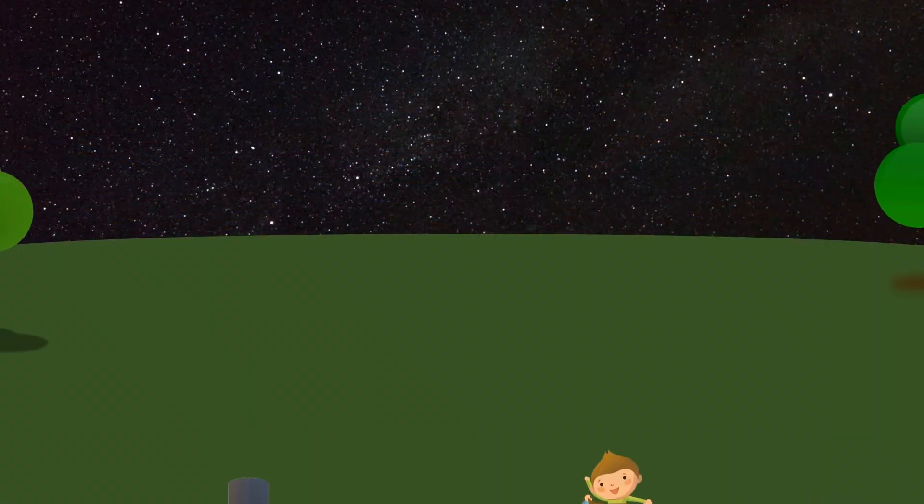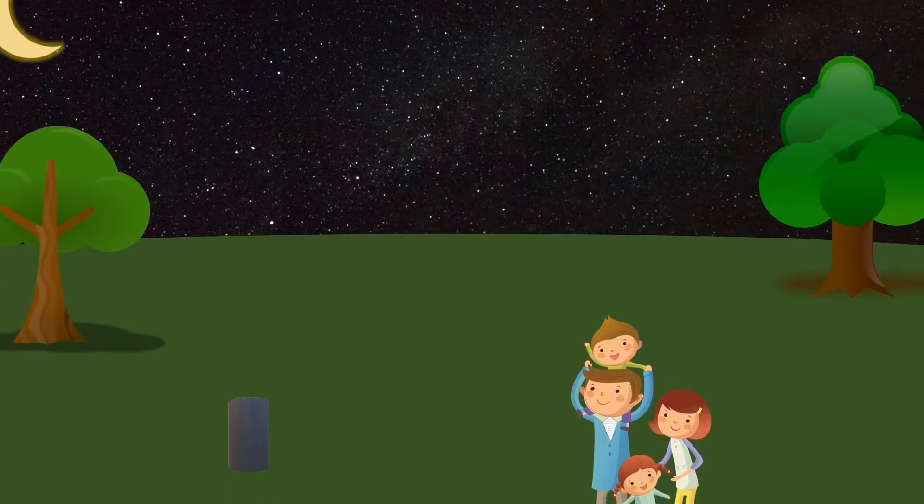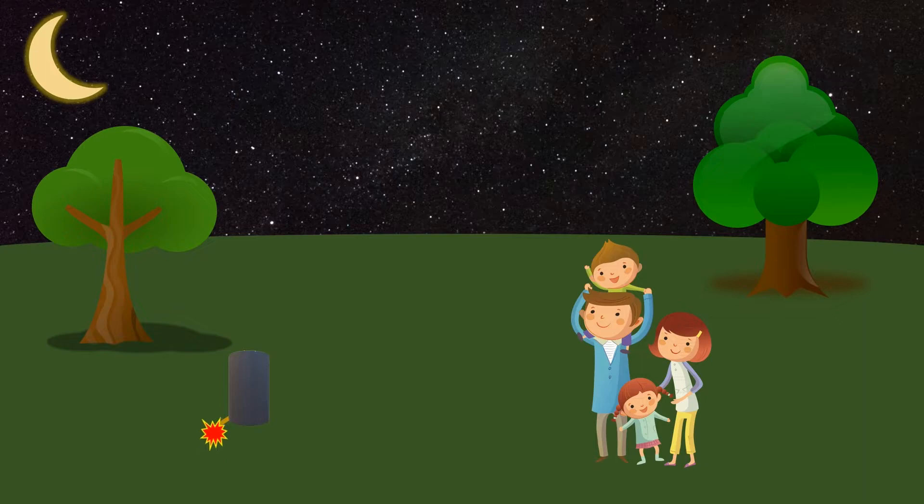The way a firework shell functions is fairly simple. Fuses with different time delays are lit, and the shell explodes in stages. The first will propel an aerial shell into the sky.